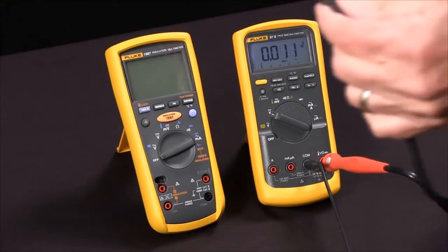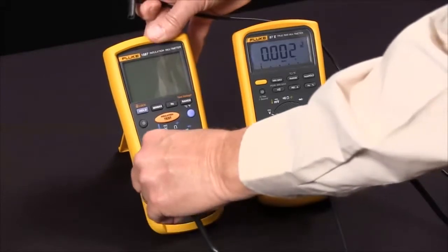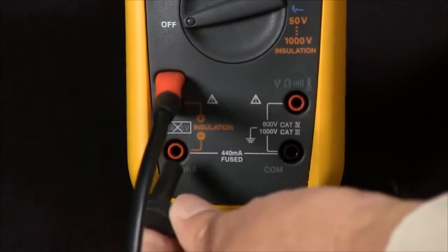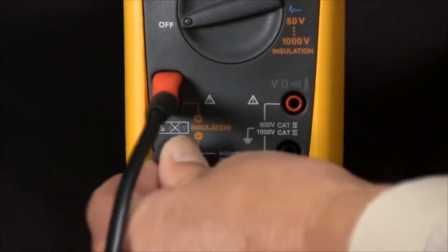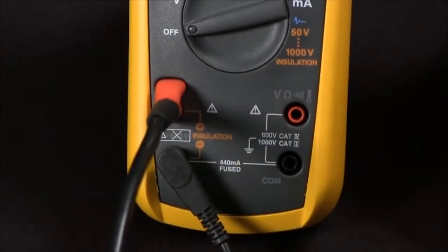So first we'll connect our special probe that only fits in one way and our low side of that, so we'll connect those across the positive and the negative of the insulation voltage.